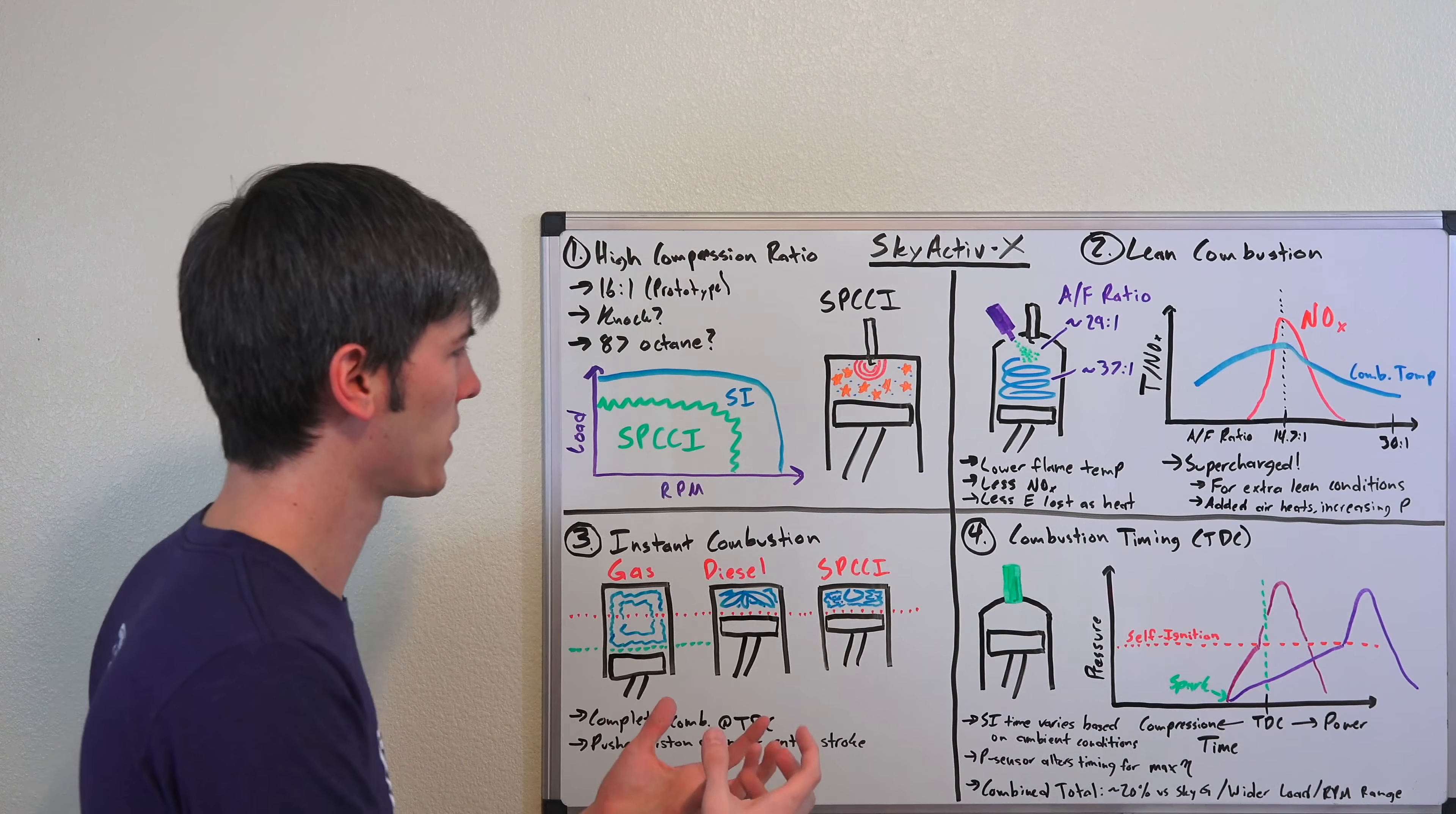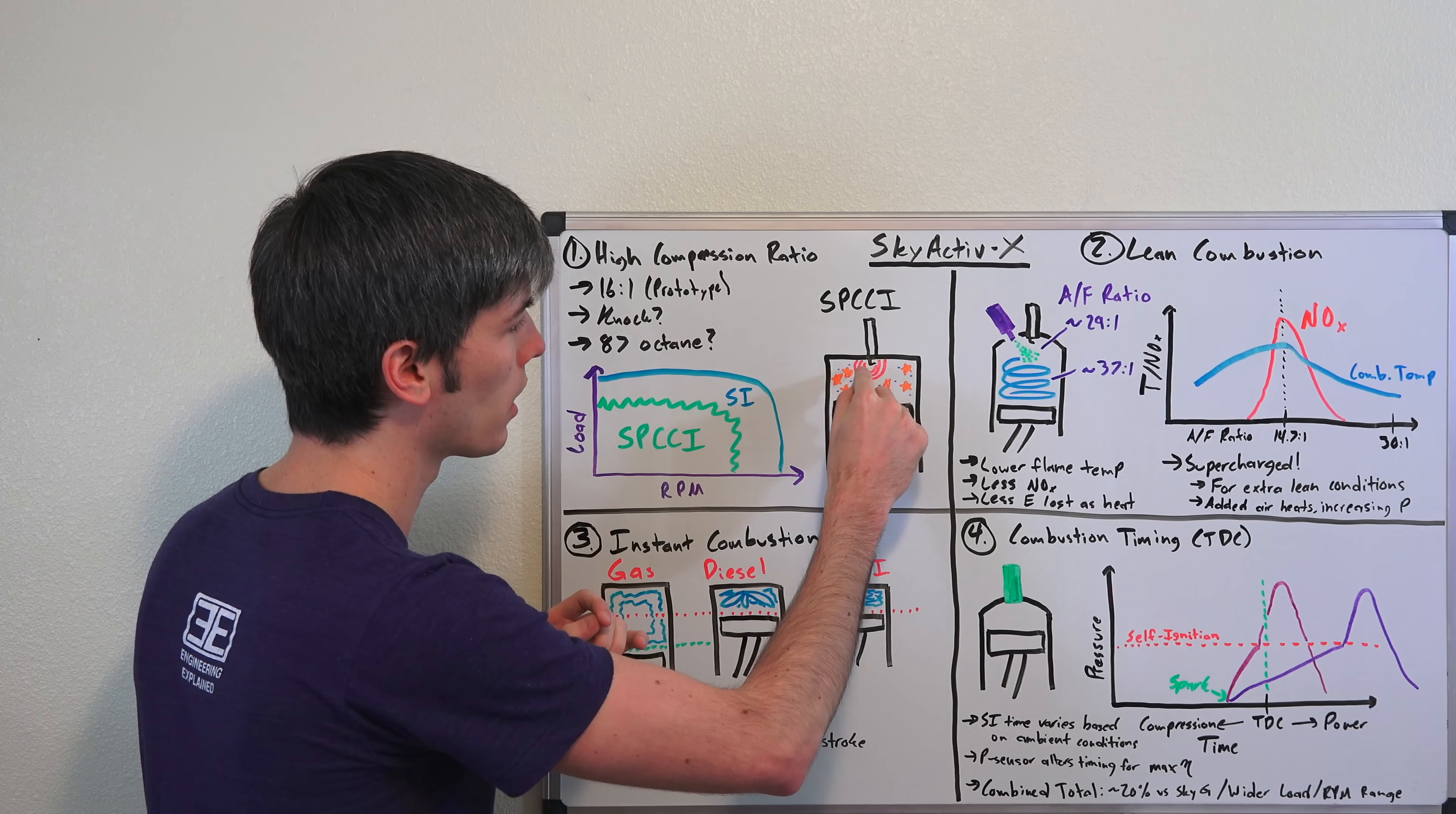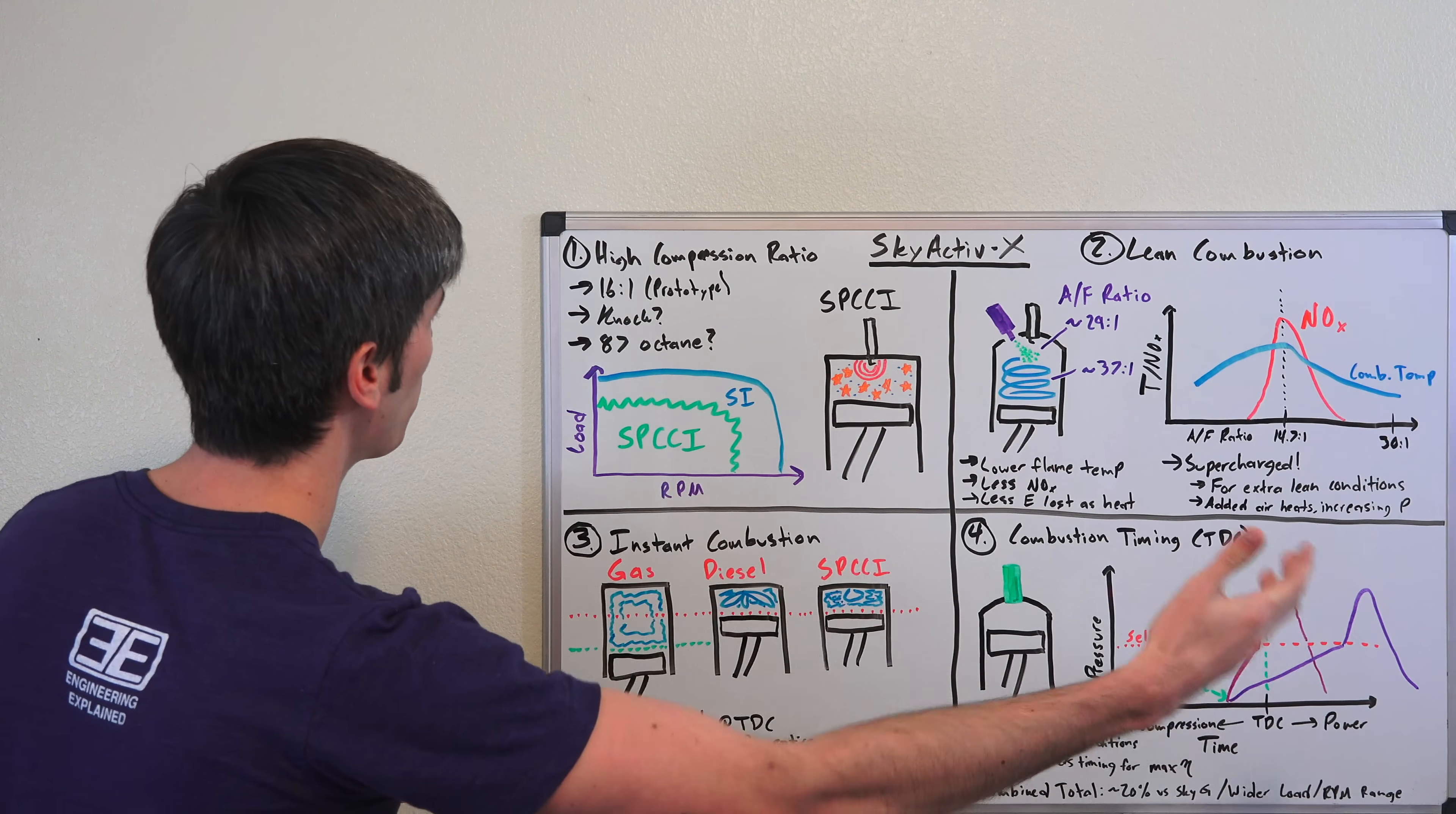So before we get into the specific changes they have made, how does this engine work? The premise of it is something called spark-controlled compression ignition, operating much more similarly to a diesel engine except that it's still using a spark plug. You have an air fuel mixture and you're going to compress that air fuel mixture as much as you can without it igniting. You want it to be just before it's about to ignite from pressure and heat alone. Then right when it gets to that point you fire a spark plug that creates a pressure wave, and as that pressure wave expands outward, it forces the rest of that mixture to ignite. So all of it simultaneously combusts.